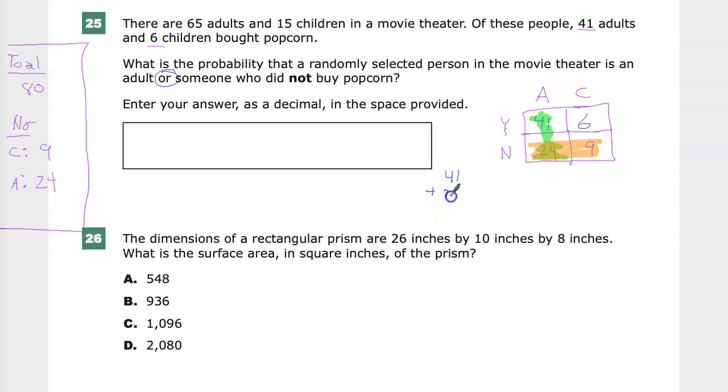41 plus 24 plus 9, and that gives me 74. That's my total number of people who meet the criteria to either have been an adult or did not buy popcorn at this movie.